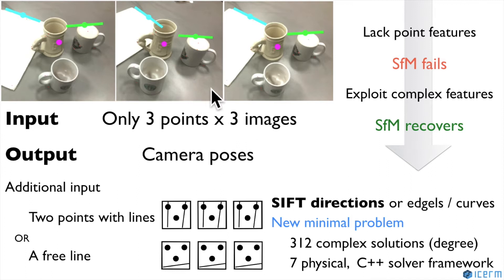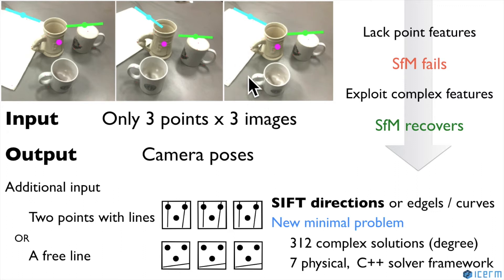We want to estimate camera rotation and translation to perform 3D reconstruction. Many ordinary objects have very few point features, causing structure from motion to fail.